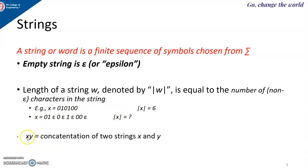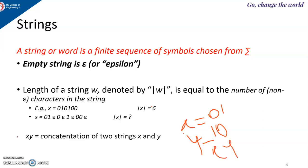If x and y are strings from the same alphabet, then x followed by y — we call it the concatenation of two strings x and y. Suppose x equals 0, 1 and y equals 1, 0, then x concatenated by y will be equal to 0, 1, 1, 0 — first the symbols of x followed by the symbols of y.